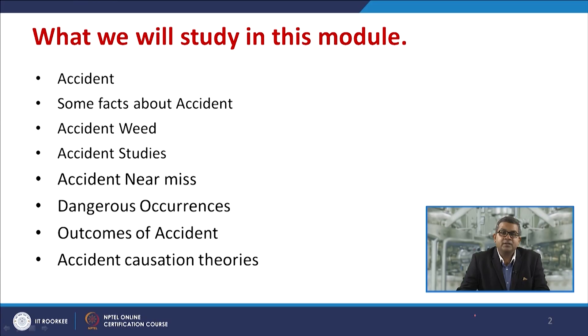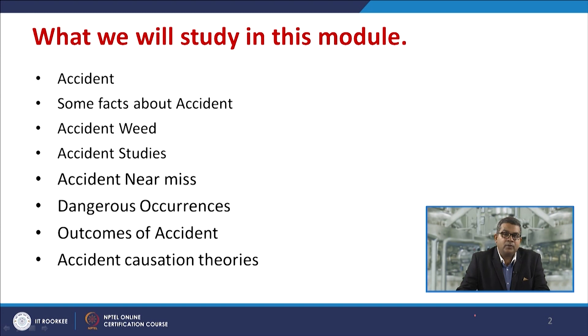Welcome to the new module related to accident research and investigation. We are starting a new chapter on accident investigation, which is very vital because it gives you proper information about what went wrong and how we can change things so that accidents do not happen in future. In this module we will study about accidents, accident weed, accident studies, near misses, dangerous occurrences, outcomes of accidents, and accident causation theories.